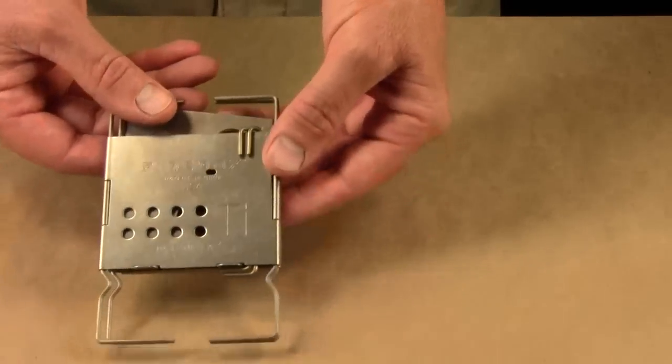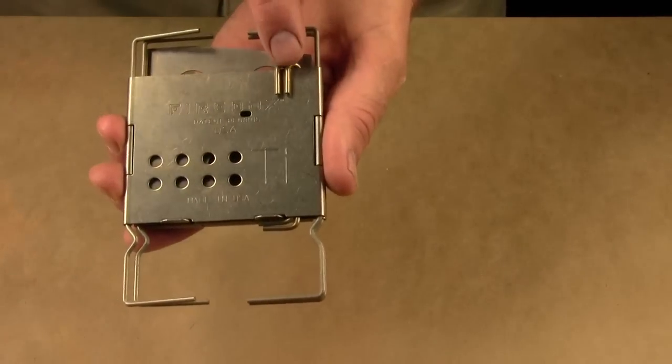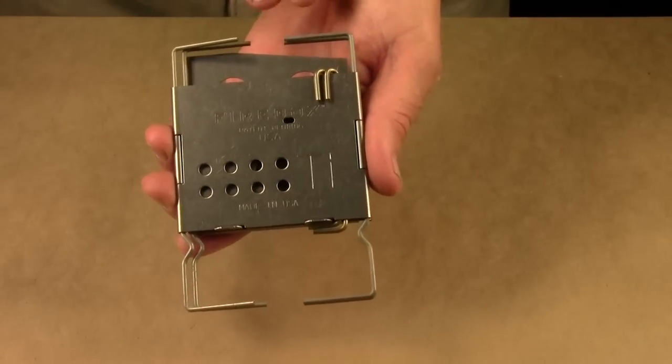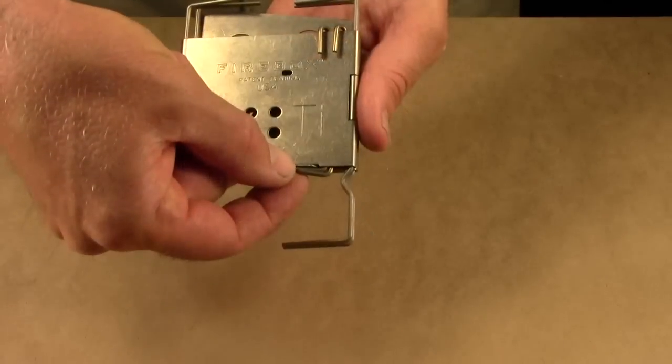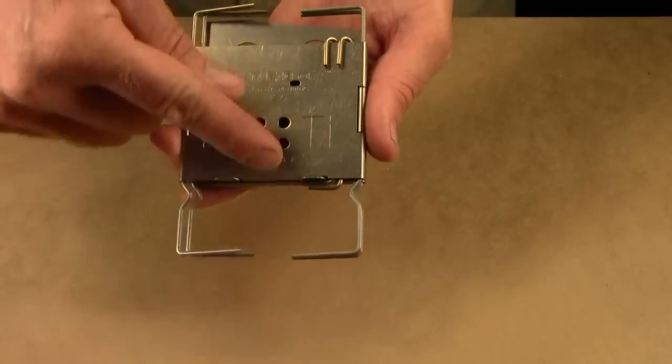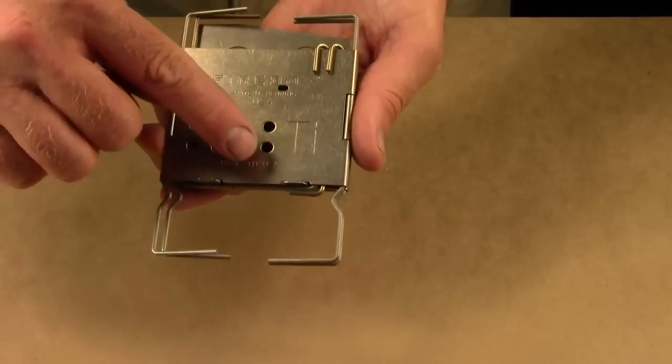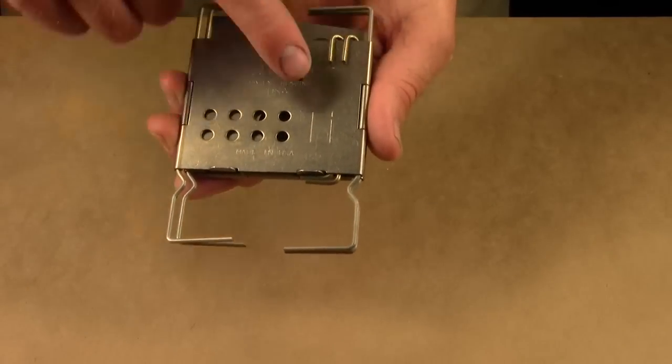So the first thing I want you to notice are the Nano sticks and how they are folded into the Nano. One of the Nano sticks is slightly longer than the other one, and that is so that they can nest in here.